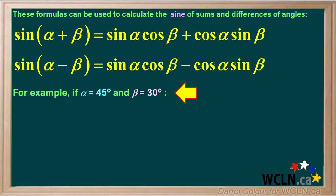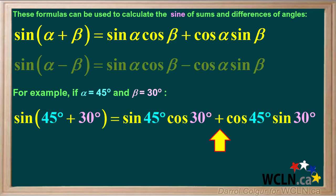For example, if alpha is 45 degrees and beta is 30 degrees, the sine of 45 degrees plus 30 degrees equals sin 45 times cos 30 plus cos 45 times sin 30.